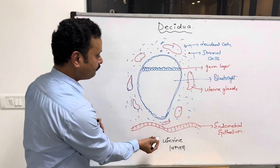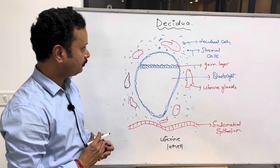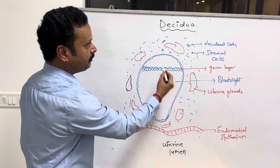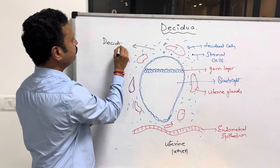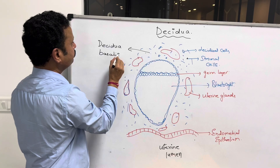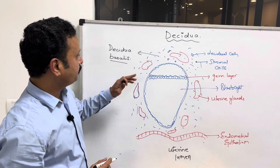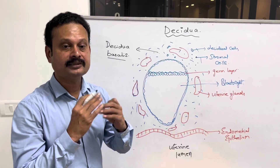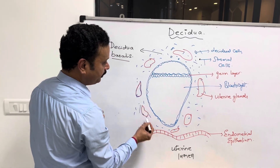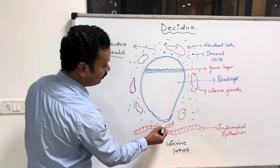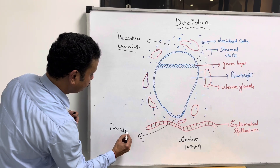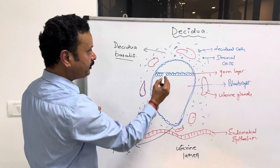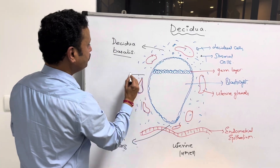After the implantation of the blastocyst, the portion of the endometrium which is thicker towards the embryonic pole of the blastocyst is called decidua basalis. This can also be referred to as the decidual plate because it is firmly connected or attached to the chorion. The portion of the uterine endometrium towards the ab-embryonic pole is called decidua capsularis, and the rest of the decidua between the embryonic pole and ab-embryonic pole is called decidua parietalis.